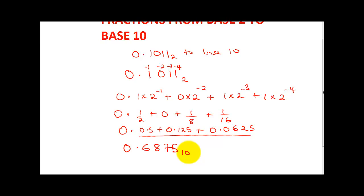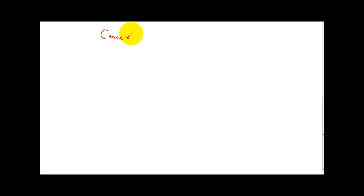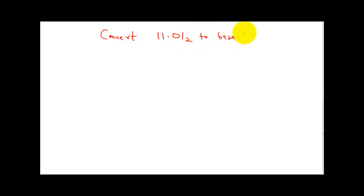Now I'm going to give you a second example so that you can understand it very well. Let's convert 1.101 base 2 to base 10. Now we have both the right-hand side and the left-hand side having numbers.